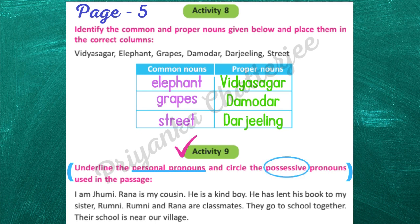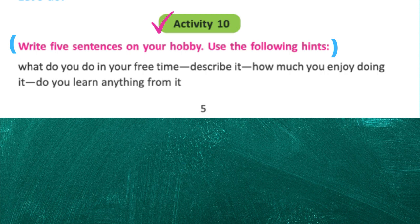Next, activity 9: underline the personal pronouns and circle the possessive pronouns. The answers: personal pronouns are I, my, his, their, our — and the possessive pronouns are to be circled.